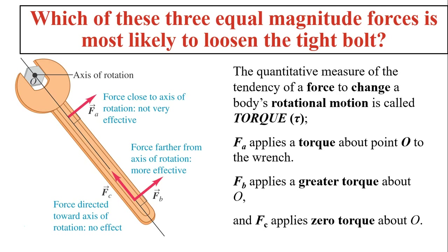Now let's consider this situation. Which of the three equal magnitude forces is most likely to loosen the tight bolt? To loosen the tight bolt, this is a motion of rotation. The whole bolt is not moving in translation — it's not translational motion because the center of mass did not move. But the rest of the bolt is rotating around its center of mass, O. That's called a rotation.